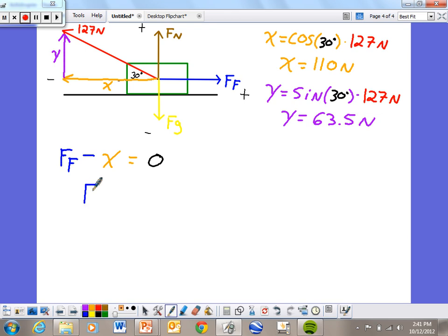A little bit of algebra has me add x to the other side, and tells me that my friction and x are equal. And since I already solved for x in step 3, I know then that my friction must be 110 newtons. So that part is done.